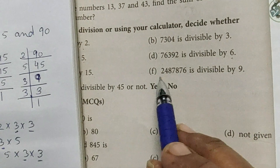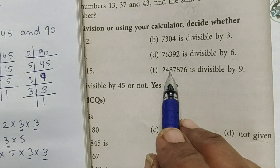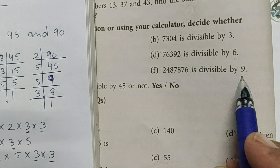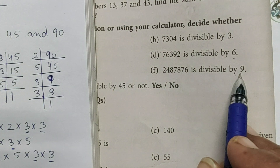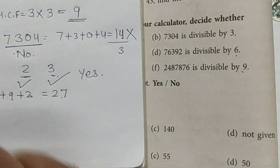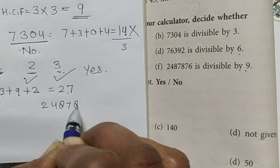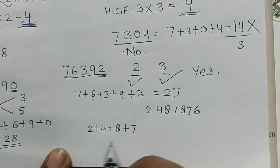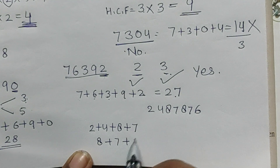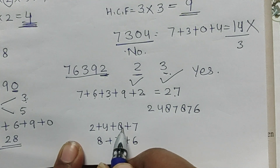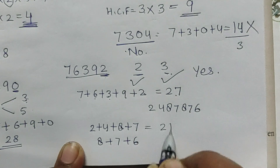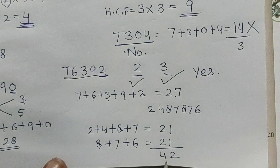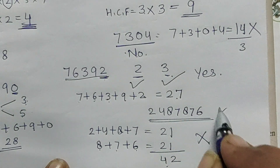Last one: a very large number — is it divisible by 9? The divisibility rule for 9 is that the sum of all digits must be divisible by 9. Adding the digits 2, 4, 8, 7, 8, 7, 6: 2 + 4 = 6, 6 + 8 = 14, 14 + 7 = 21, 8 + 7 = 15, 15 + 6 = 21. Total sum is 42. Since 42 is not divisible by 9, this number is not divisible by 9.